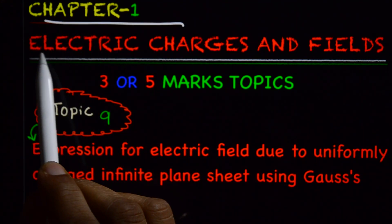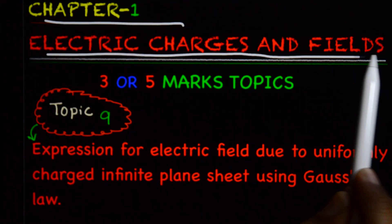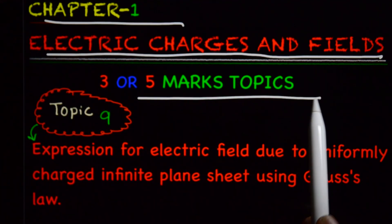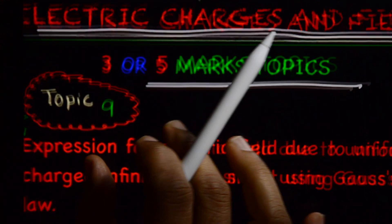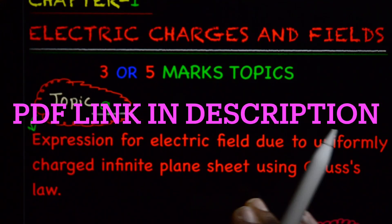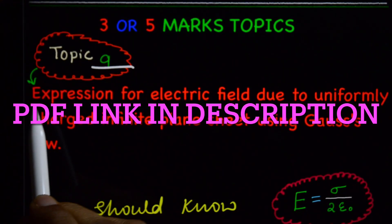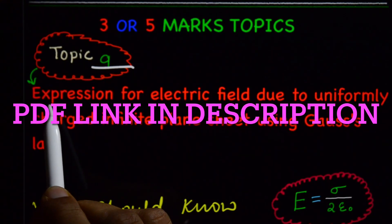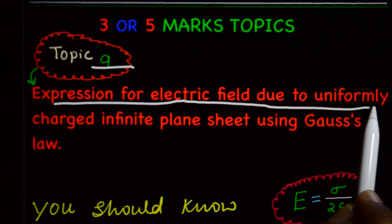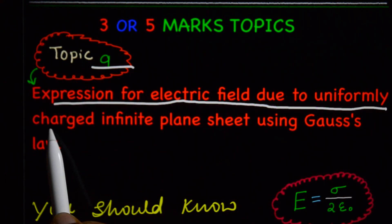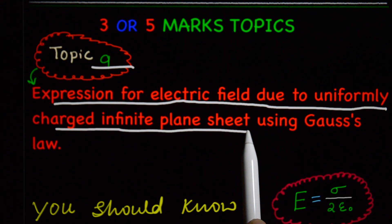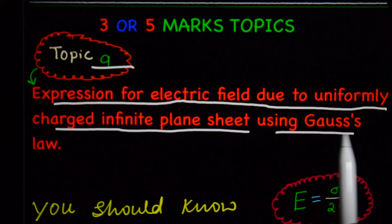Chapter 1: Electric Charges and Field. This is a 3 or 5 marks topic — topic number 9. In other words: expression for electric field due to uniformly charged infinite plane sheet using Gauss's Law.